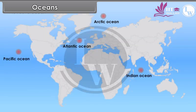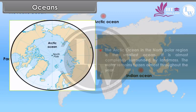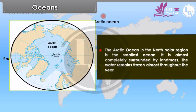The Arctic Ocean, in the North Polar region, is the smallest ocean. It is almost completely surrounded by land mass. The water remains frozen almost throughout the year.